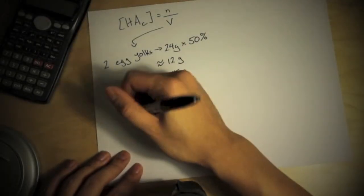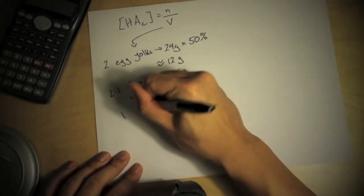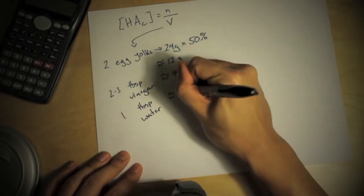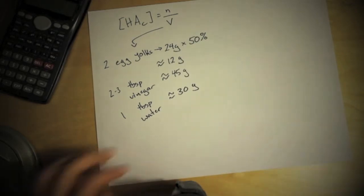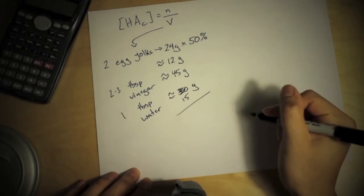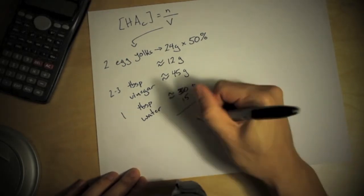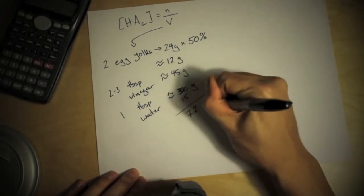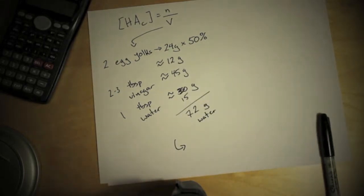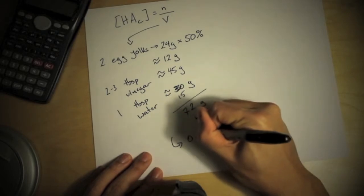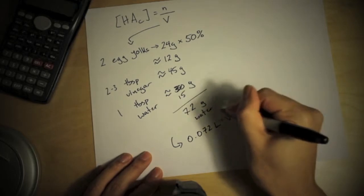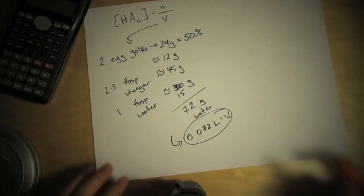In addition to this, depending on how I make my mayonnaise, sometimes there's about one tablespoon of water and that's roughly about 15 grams. So in total that gives me about 72 grams of water, and because water is so well understood I know that is 0.072 liters. That's the volume. Awesome.